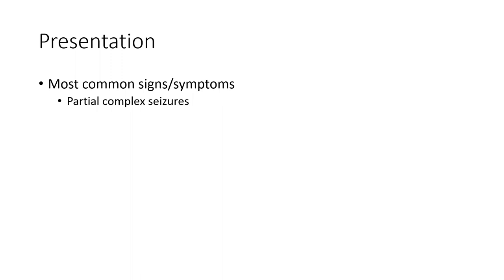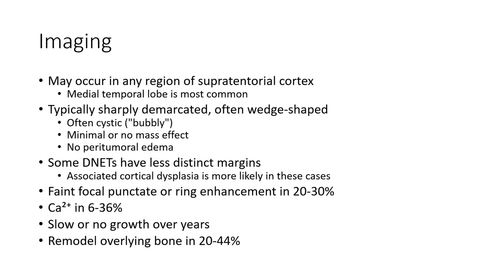Most common signs and symptoms are partial complex seizures. Imaging may occur in any region of supra-central cortex. Major temporal lobe is most common. They have a type called wedge-shaped, open cystic, wobbly, with minimal or normal mass effect and known peritumoral edema.